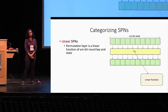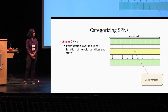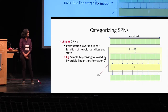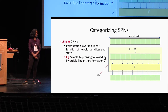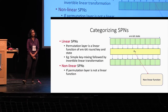We categorize SPNs as linear and nonlinear based on the permutation PI used in the permutation step. In a linear SPN, the permutation layer is a linear function of the WN-bit round key and the state — for example, simple key mixing followed by an invertible linear transformation T. When the permutation layer consists of a permutation PI that is a nonlinear function of either the round key or the state, the SPN is considered to be a nonlinear SPN.